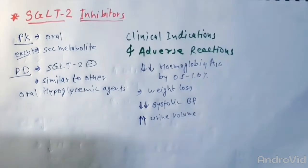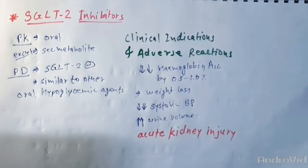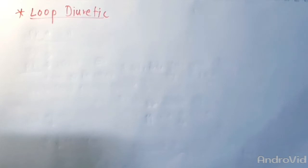They can increase the urine volume. They can cause acute kidney injury. So now let us discuss the loop diuretics.